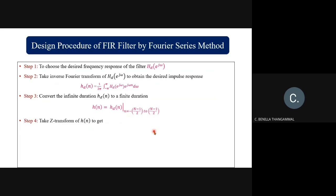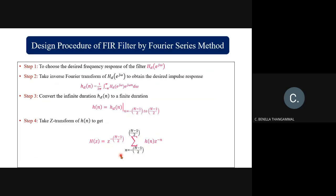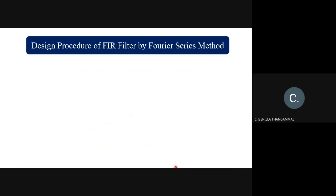Step four: take the Z-transform of h(n). H(z) = z^(−(N−1)/2) · summation from n = −(N−1)/2 to (N−1)/2 of h(n) · z^(−n). Since the duration is from −(N−1)/2 to +(N−1)/2, to convert the non-causal system into a causal system, this term z^(−(N−1)/2) is multiplied. Step five: determine the frequency response H(e^(jω)) from h(n).